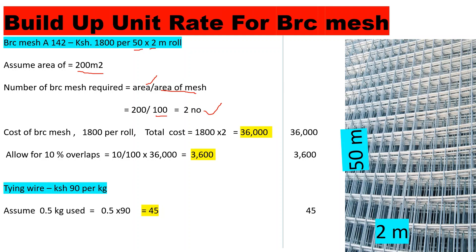Now that we know we need 2 rolls, the cost since one roll is 1,800 shillings gives us a total of 3,600 shillings. We then allow for 10 percent overlap at the edges of the BRC mesh so that they can marry with one another. The 10 percent overlap gives us an additional 3,600 shillings.